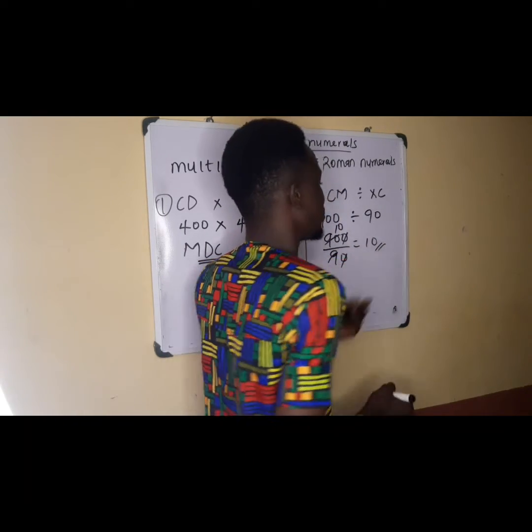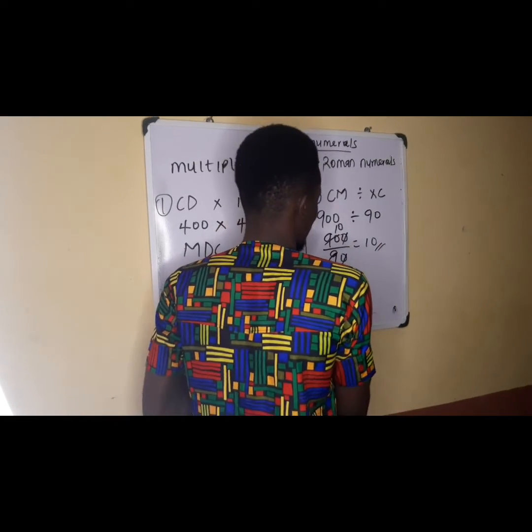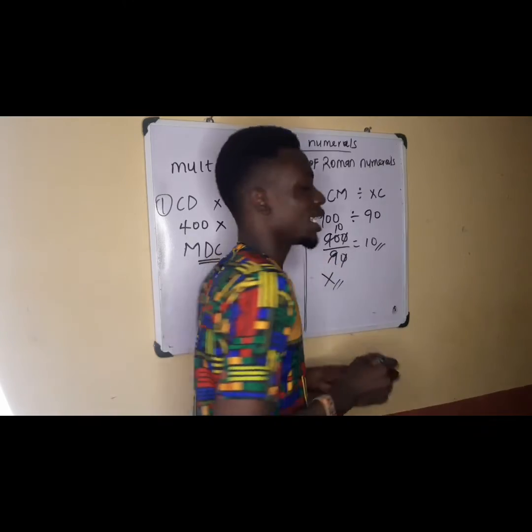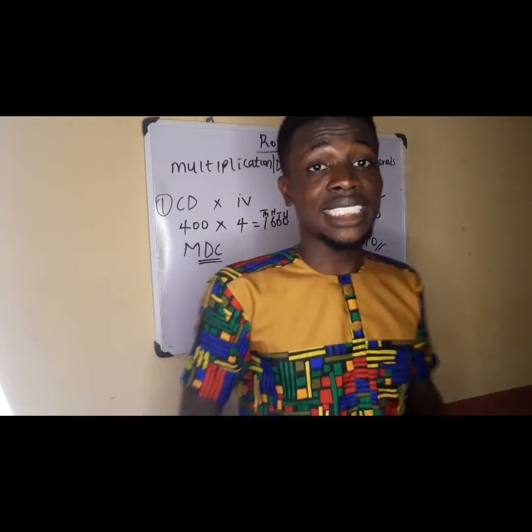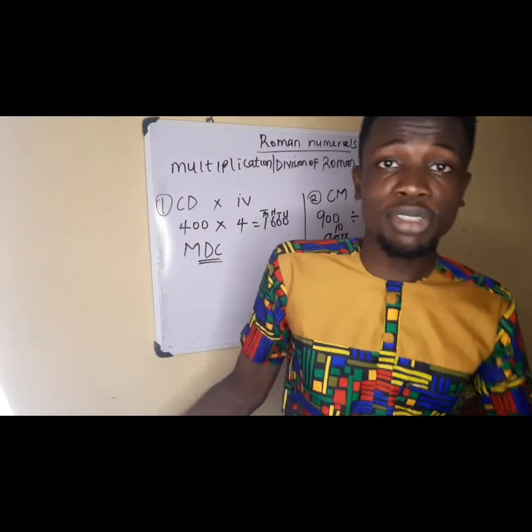Convert 10 back to a Roman figure and it gives us X, so X is our answer. This is how you can multiply or divide Roman figures. I hope you got the idea. Remember to subscribe — see you in the next class, bye!